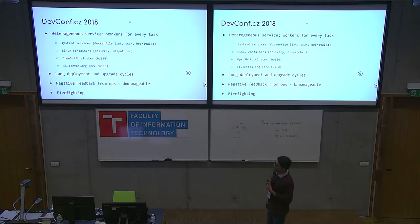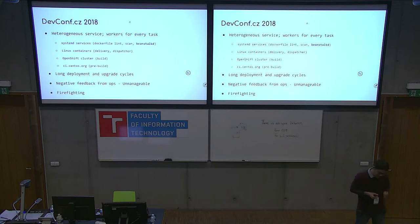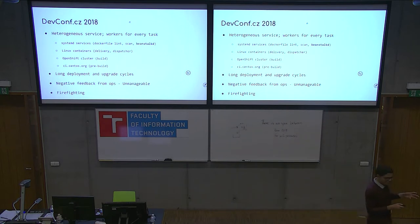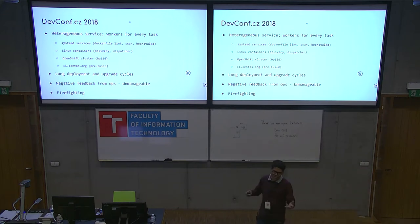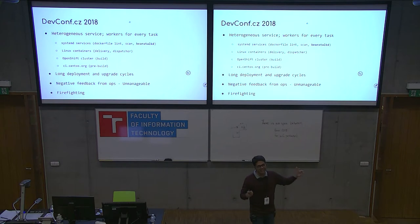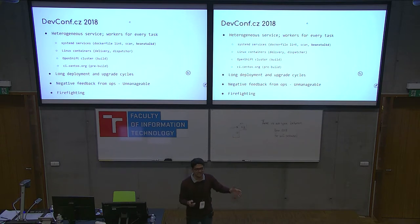A few teams tried deploying our service and came back saying it was absolutely unmanageable. We were doing firefighting most of the time — all our stand-up updates were about, okay, today the build worker was misbehaving. We were not getting time to focus on new features or attract more users. We had no guts to tell anyone that we were doing things in a stable fashion. That was 2018.